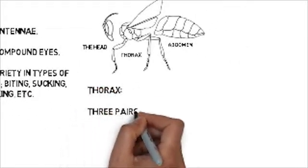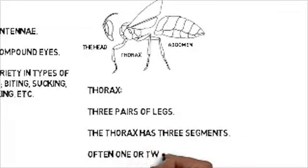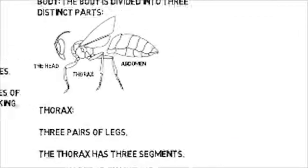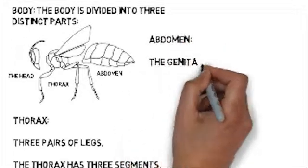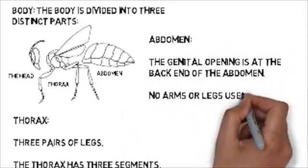The thorax is where the six legs are. The thorax is further divided into three parts and is where the wings are located. The abdomen is where the genital opening is. Insects have no legs or wings on their abdomen.